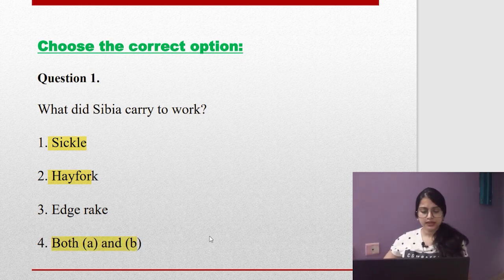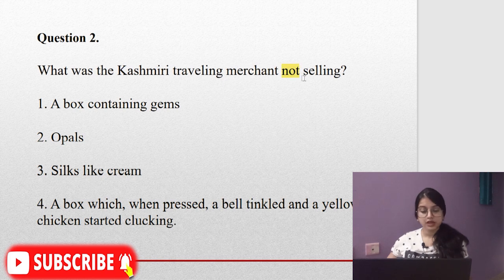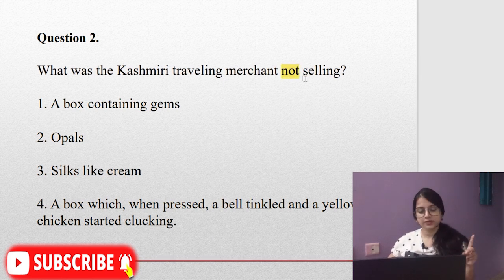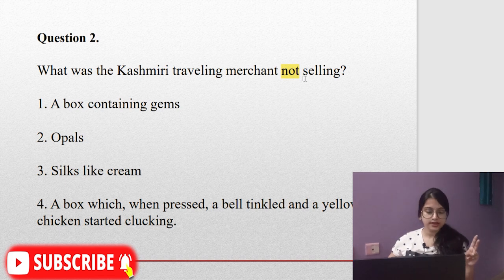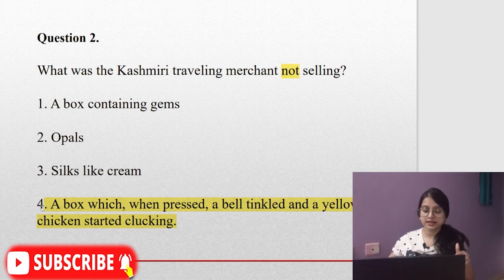Coming to the second question: What was the Kashmiri traveling merchant NOT selling? You have to be very particular about this word 'not selling'. Is it a box containing gems? No, he was selling that. Opals? Yes, he was selling that. Silks like cream? Yes, he was selling that too. Number four, a box which when pressed, a bell tinkled and a yellow chicken started clucking. But yes, it did not start clucking, it just jumped out.